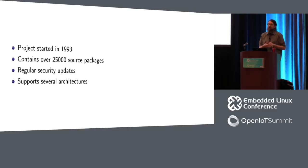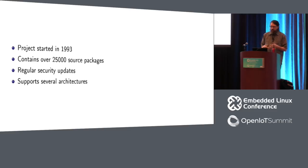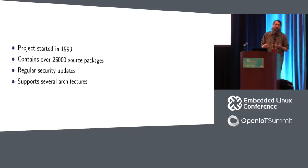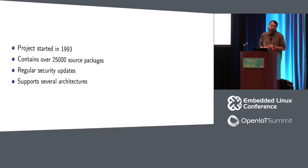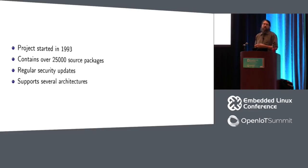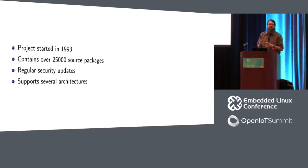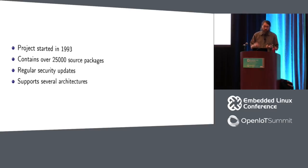Debian started almost 25 years ago. It has a huge repository of packages available — if you can run Debian on your system, you have access to a huge amount of free software. Not everything, but a lot. It also gets regular security updates for stable releases, and it supports quite a few architectures, including many typically used for embedded systems. As embedded hardware has edged beyond the microcontroller era and onto general-purpose computers, Debian becomes a lot more viable for a lot of these strong reasons.